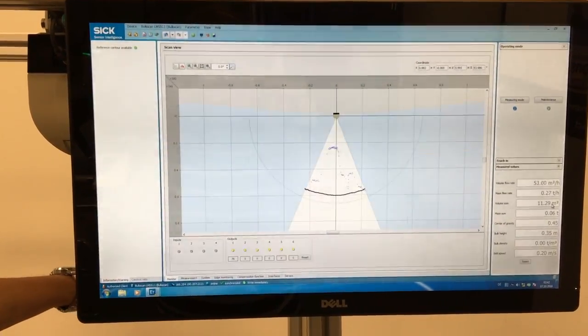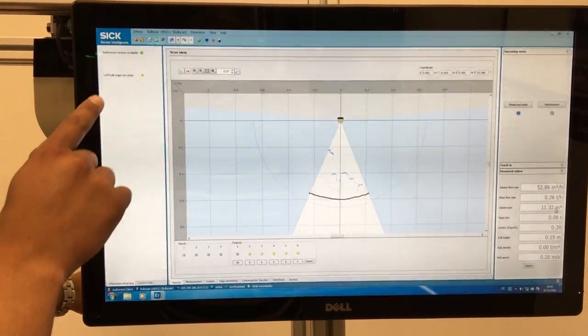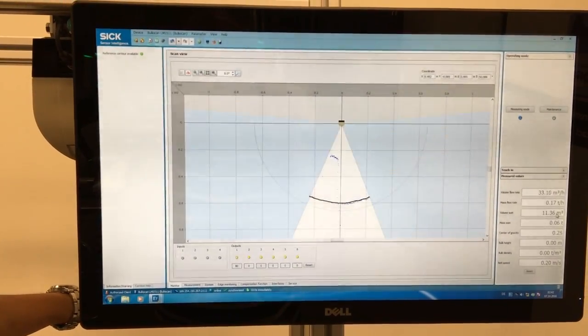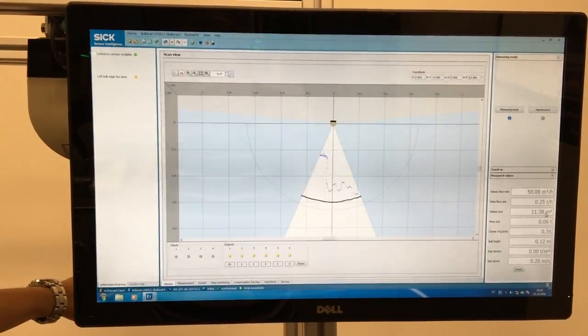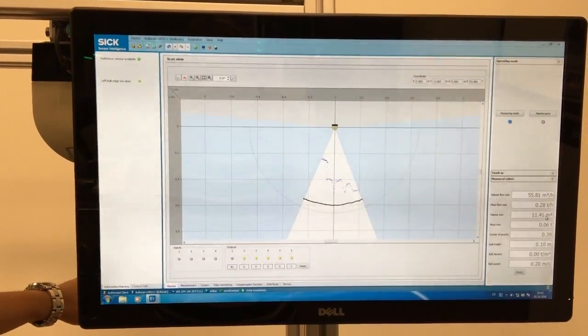If I move my hand towards the left, the sensor will give me a warning telling me that my belt has slipped to the left. This helps me prevent belt slippage and mechanical wear and tear.